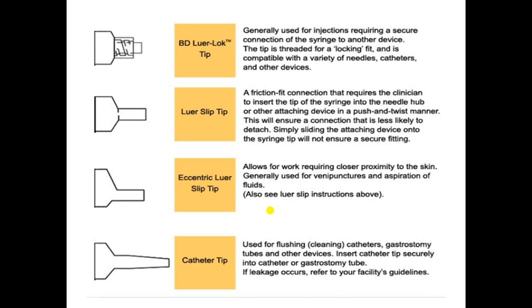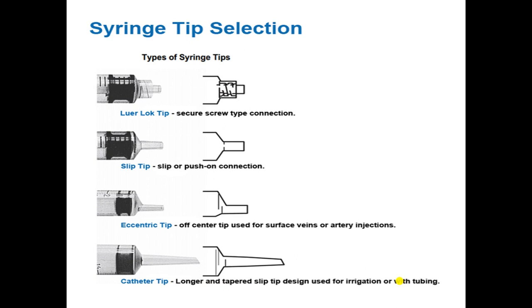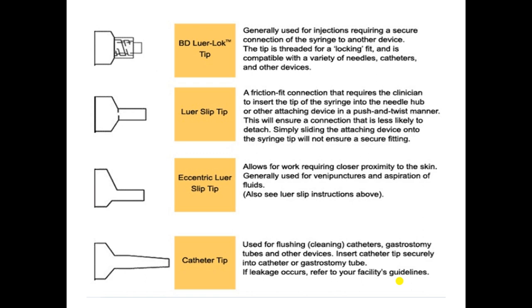Catheter tip syringes are useful for wound irrigation and flushing medical tubing. Manufacturers make the catheter tip with a tapered end to allow it to slip into tubing. This tip is used for flushing catheters, gastrostomy tubes, or other devices — insert the catheter tip securely and if leakage occurs, refer to your facility's guidelines. Select the syringe tip according to the clinical condition.